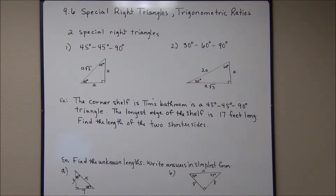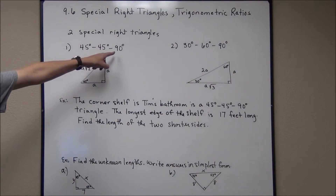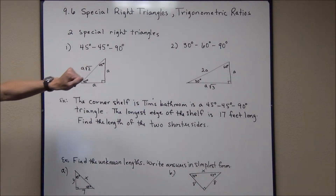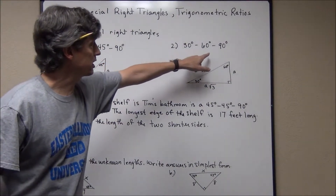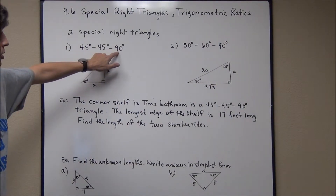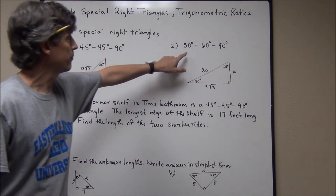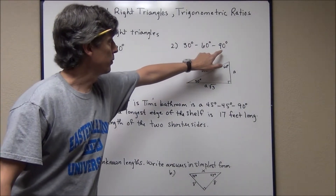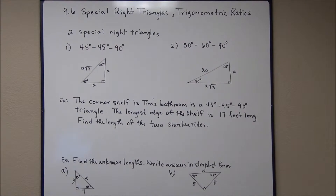There are two special right triangles we're going to be looking at. Remember, a right triangle has a 90-degree angle. There's a 45-45-90 degree triangle and then there's the 30-60-90 degree triangle. Notice if you add up the measures you get 180, which is true for the sum of the interior angles of any triangle.